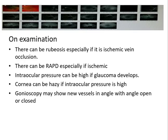On examination, there can be rubeosis — new blood vessels on the iris — commonly seen in ischemic vein occlusion. There may also be a relative afferent pupillary defect (RAPD), again seen in ischemic cases. Intraocular pressure can be elevated if the patient has glaucoma. The cornea can be hazy if there is corneal edema from high intraocular pressure. Gonioscopy may show new vessels in the angle, suggestive of rubeotic glaucoma.